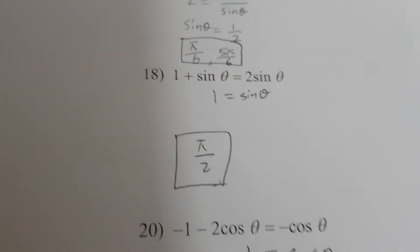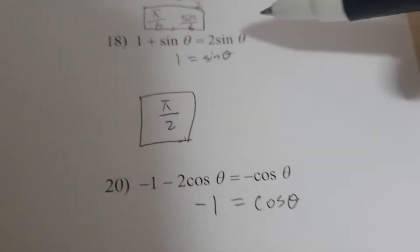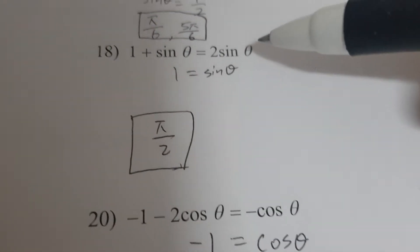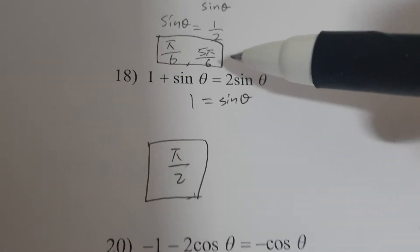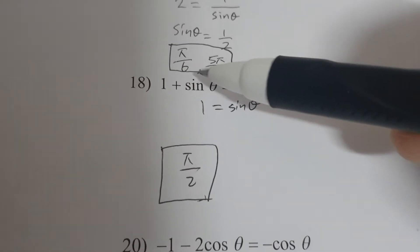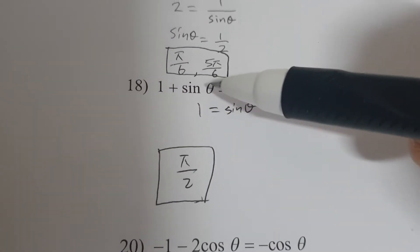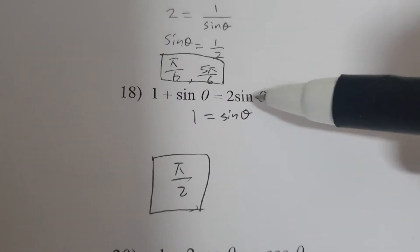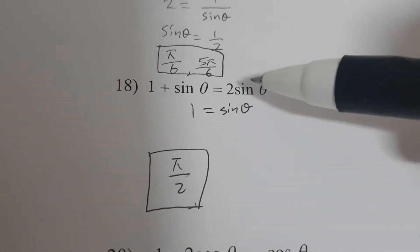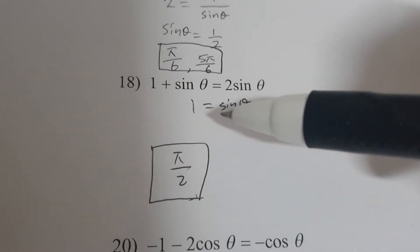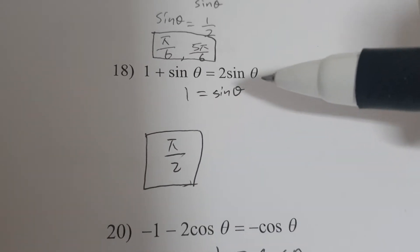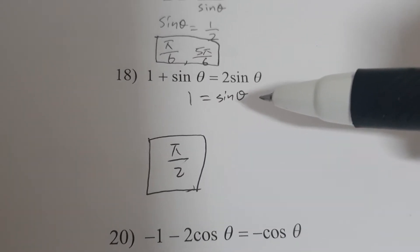To get theta here, we'll move the sine theta to the right. So we'll have 1 equals sine theta.